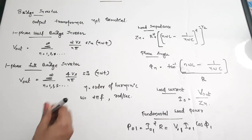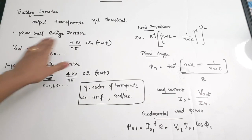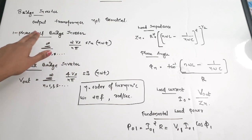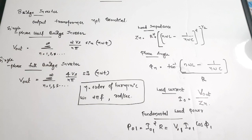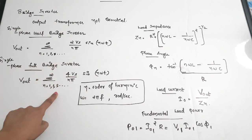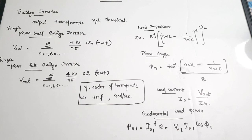This output voltage equation is common for both the single-phase half bridge and single-phase full bridge. The equation for the single-phase full bridge inverter is: Vout = Σ (n=1,3,5,…,∞) [4Vs / (nπ)] sin(nωt), where Vs is the source voltage, n is the order of the harmonic, and ω is the angular frequency in radians per second.